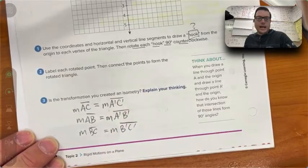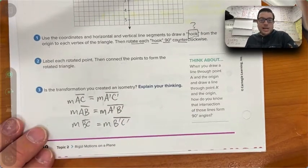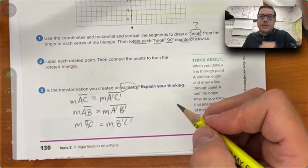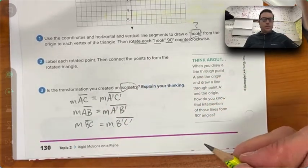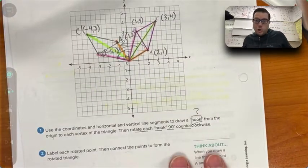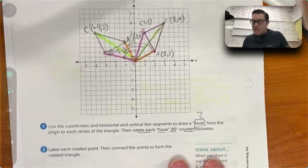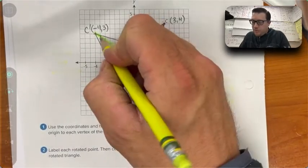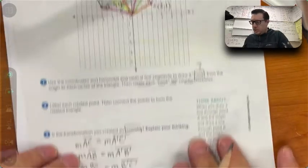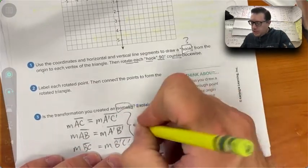The measure of BC is equal to the measure of B prime C prime. What that means is that an isometry is when you take a shape and you change it, but you get the exact same shape back. In the change, the size of the triangle didn't change. It stays the same size going from one triangle to the next, but it's in a different location.